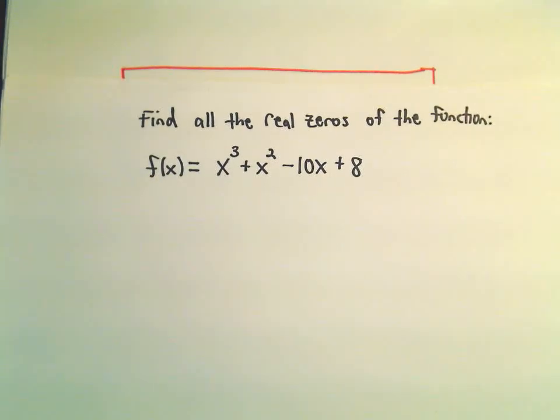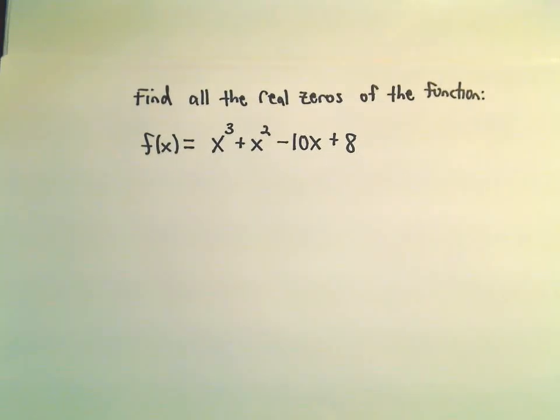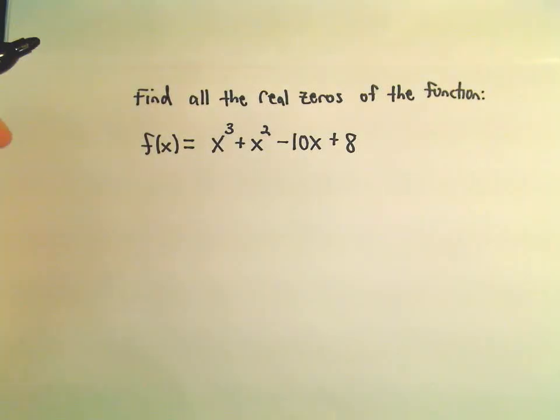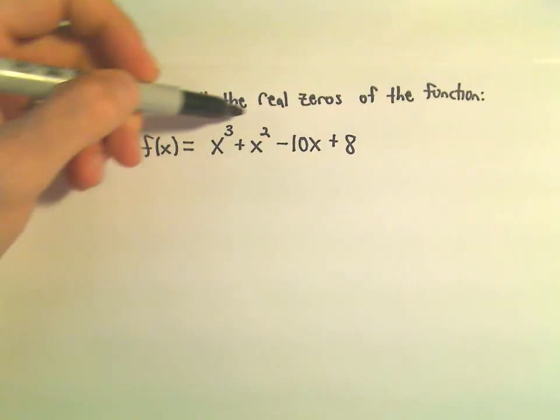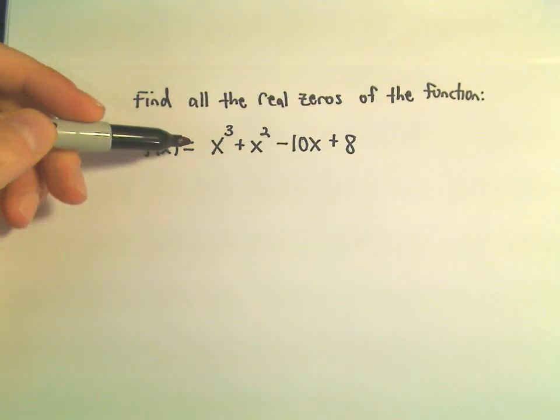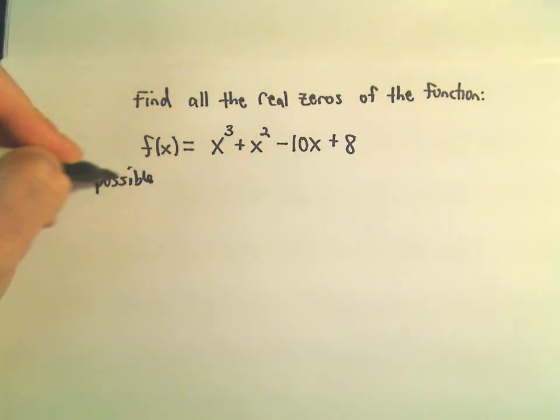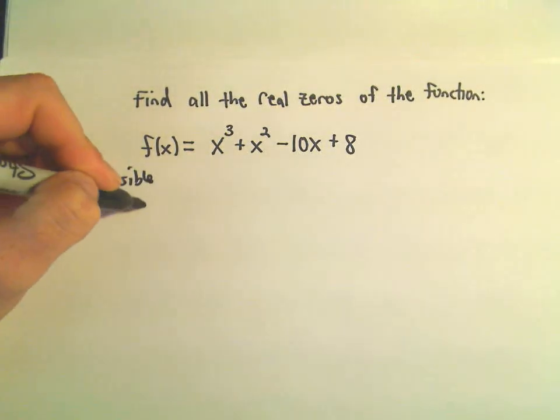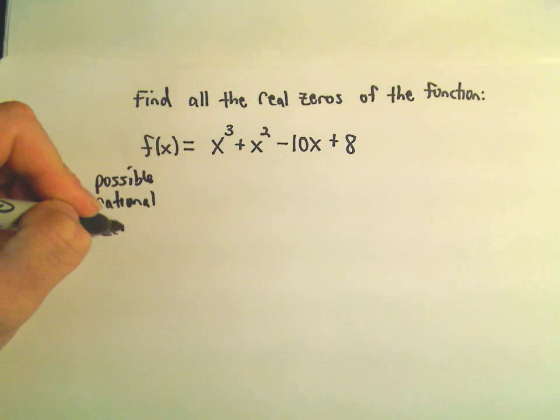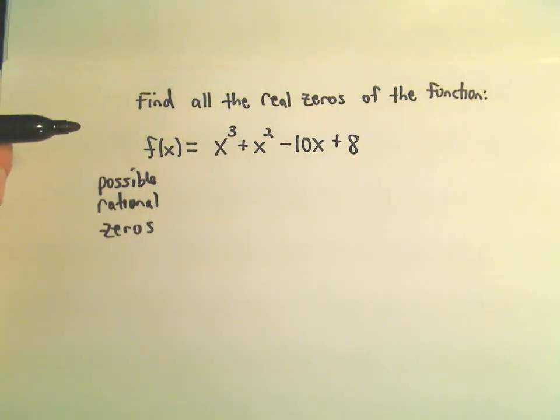So, a couple things here. To get started, basically our first goal is to try to find a zero. So what I'm going to do is start by listing the possible rational zeros because I'm not sure what the zeros are.